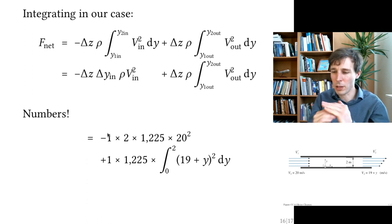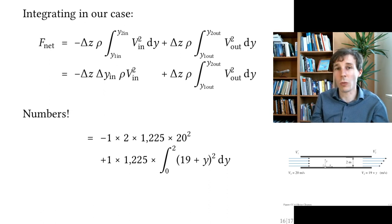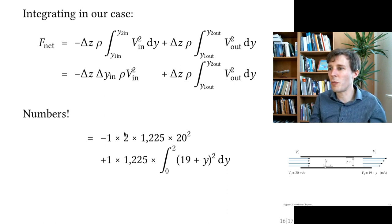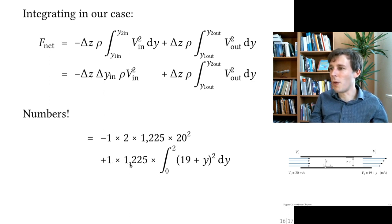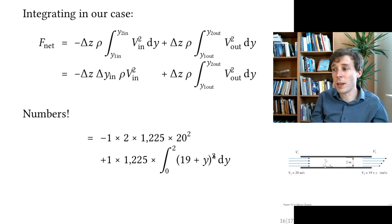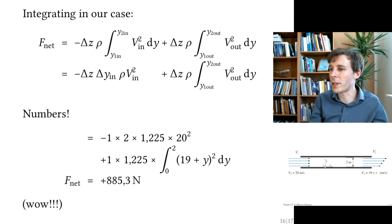Plugging in numbers: for the inlet term, delta_z equals 1 meter, delta_y equals 2 meters, rho is the density of air, and v_in is 20 m/s squared. For the outlet, delta_z is 1 m, rho is the density of air, and we integrate from zero to 2 the function v_out equals (19 + y) squared with respect to dy. Carrying out the math gives a net force of positive 885 Newtons.